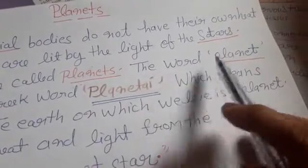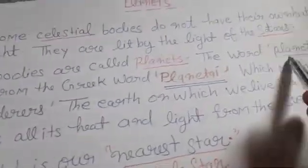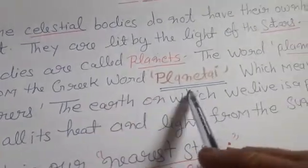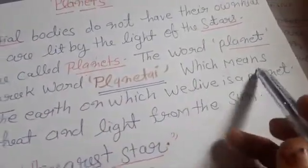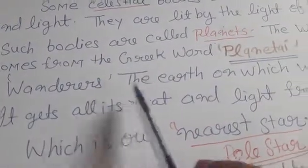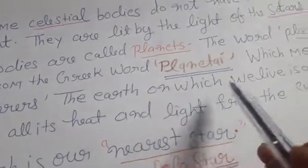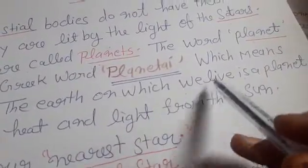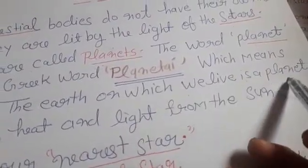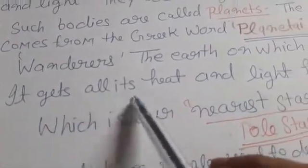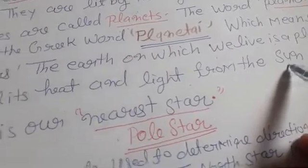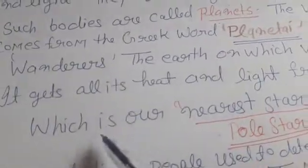The word planet comes from the Greek word plantae, which means wonders. The earth on which we live is a planet. It gets all its heat and light from the sun. We already know which is our nearest star.